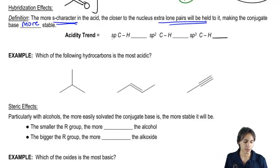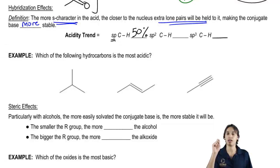what it would be is that sp would have 50% S character because it's basically one part S, one part P.